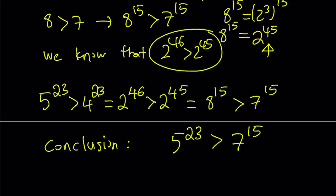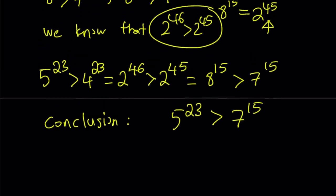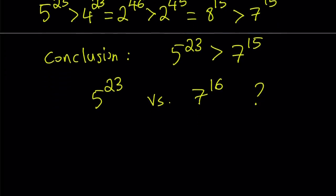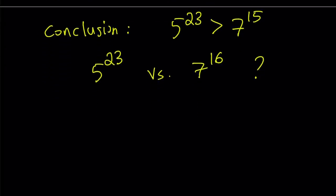A lot of times people say, if you have a situation where we compare two exponential numbers, usually the one with the smaller exponent is the larger one. Well, that depends on the numbers. In this case, the one with the larger exponent wins, and it may differ from case to case. I just want to bring up an open-ended question that I'm not going to answer, but I want you to think about it: how about if we had to compare 5 to the power 23 versus 7 to the power 16? Would the inequality still hold, or would 7 to the power 16 be larger? Can we find out — is there a way to do it? I want to leave it as an open-ended question, and if you give me some ideas, that would be great.